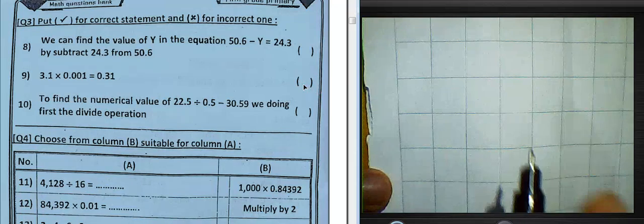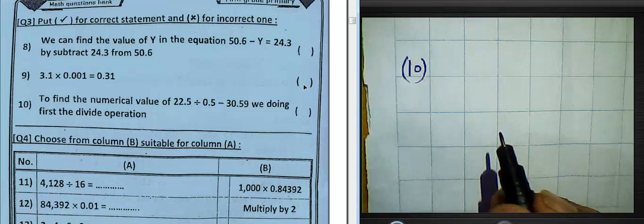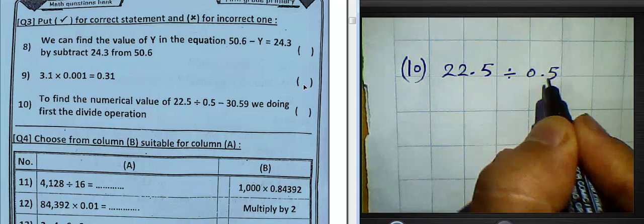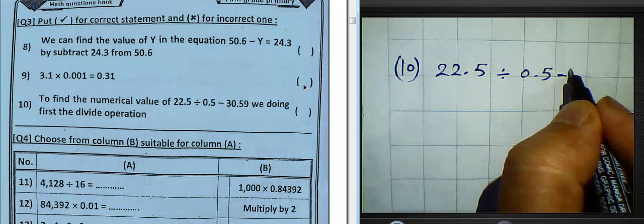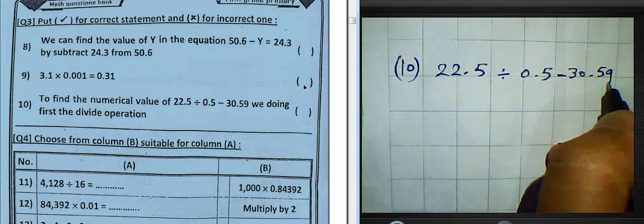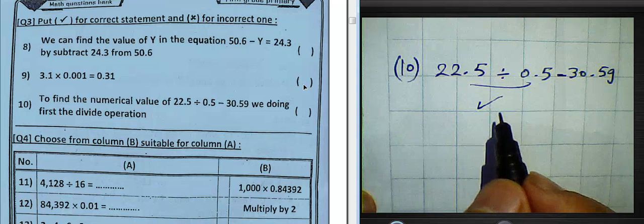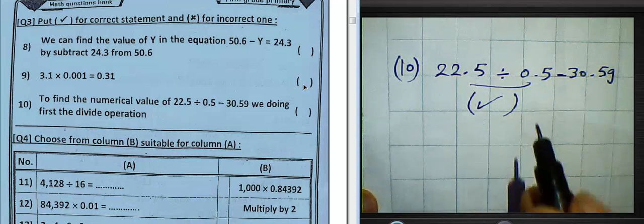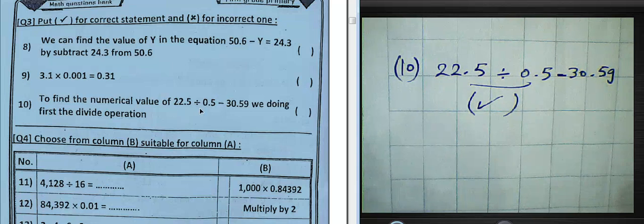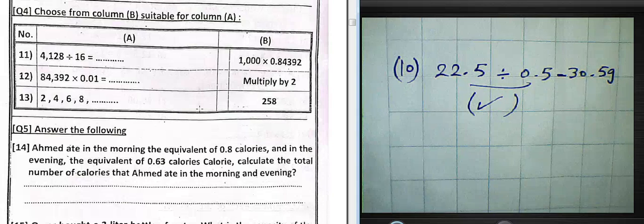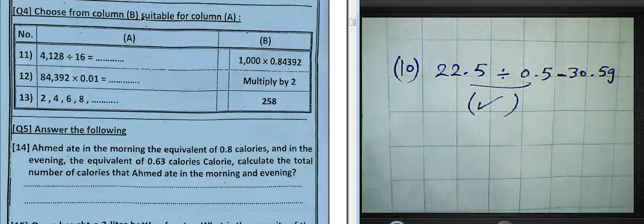Question number ten: to find the value of 22.5 divided by 0.5 minus 30.59, we must perform the division operation first. This is true, because according to order of operations, division comes before subtraction. So the answer is true.